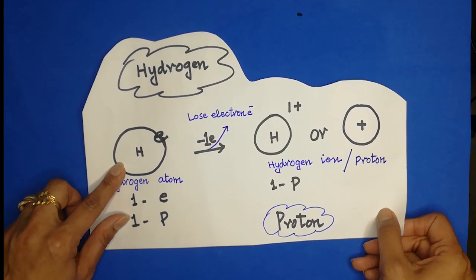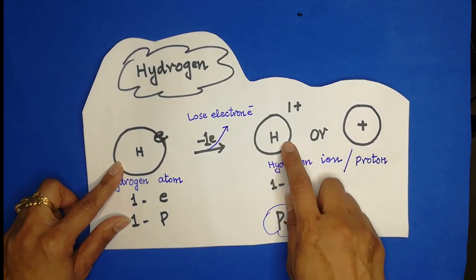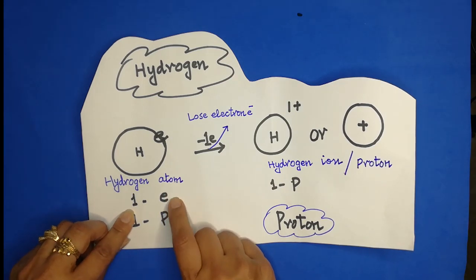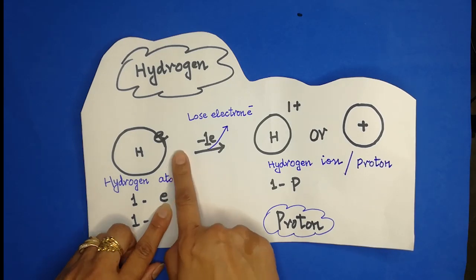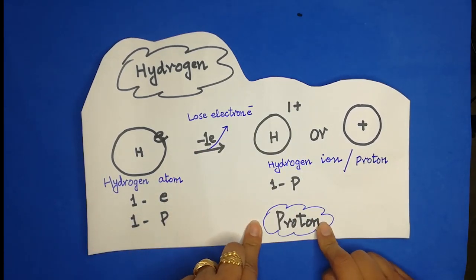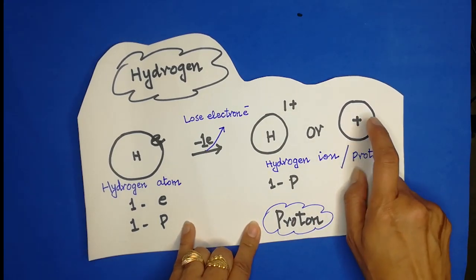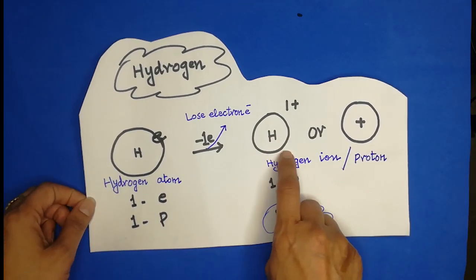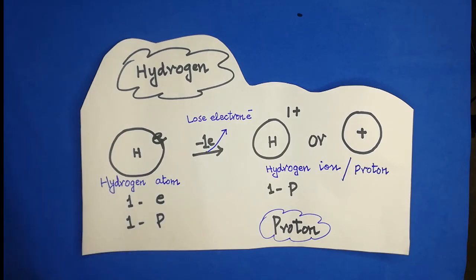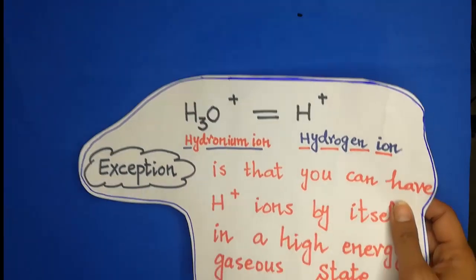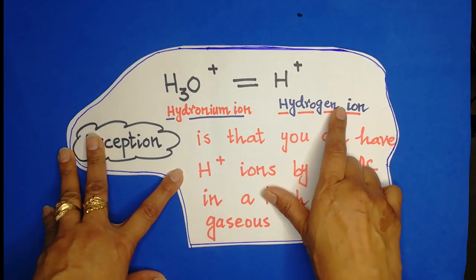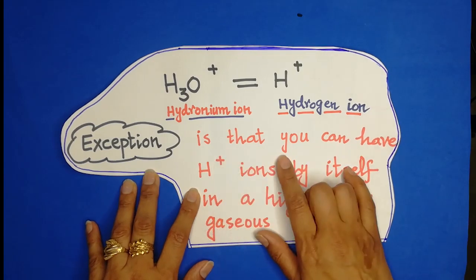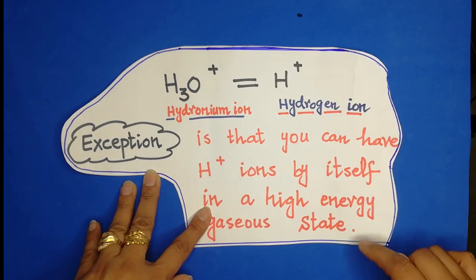A hydrogen atom loses its one electron to become a hydrogen ion. We call it a proton because one hydrogen atom contains one electron and one proton — when the electron is removed, only the proton remains. Most commonly we call it a hydrogen ion, and hydronium ion equals hydrogen ion in aqueous solution. The exception is that you can have hydrogen ions by themselves in a high-energy gaseous state.